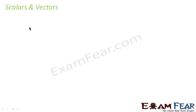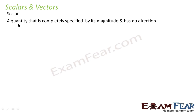Let us start the chapter with a knowledge on scalars and vectors. What do you mean by a scalar and a vector? A scalar quantity is a quantity that is completely specified by its magnitude and has no direction. That means any physical quantity which is completely described by its magnitude and has nothing to do with direction is a scalar quantity — scalar has only magnitude, no direction.